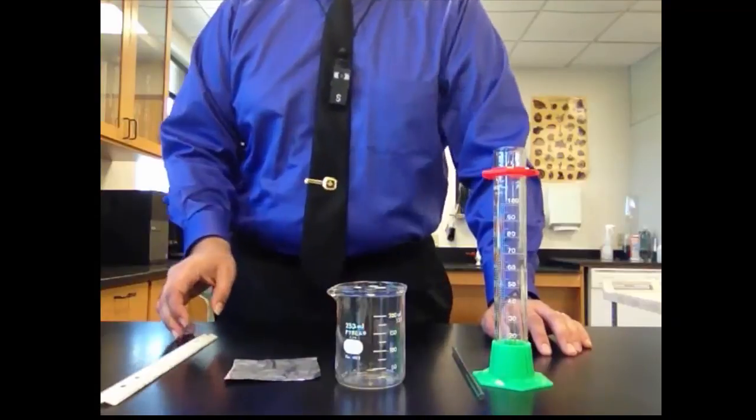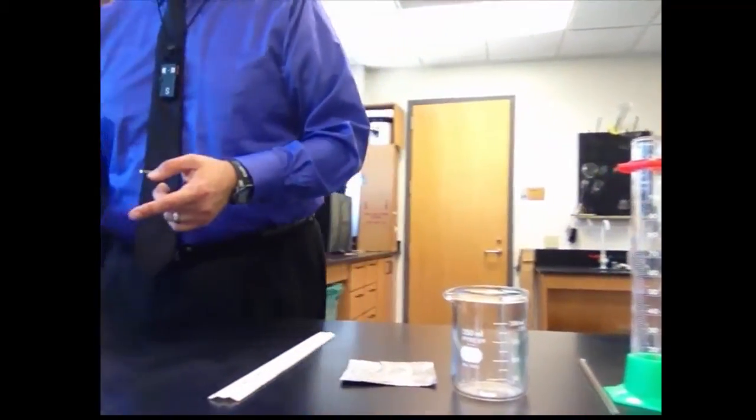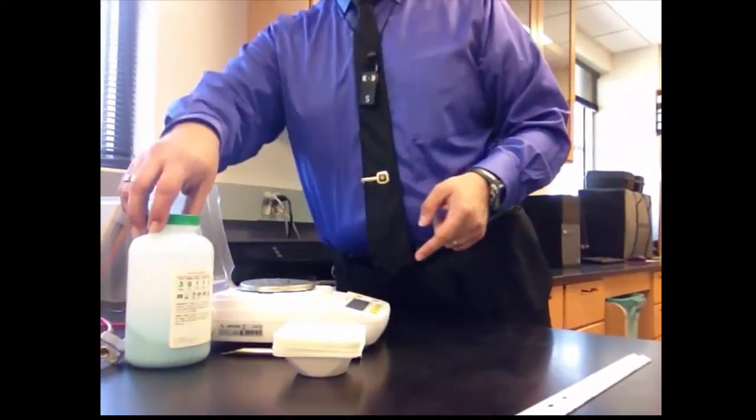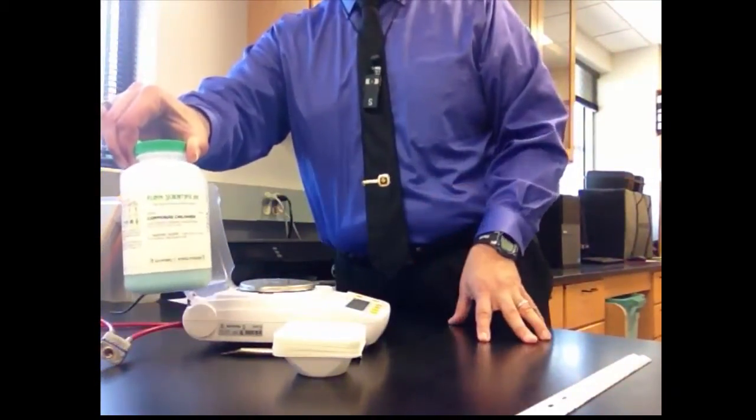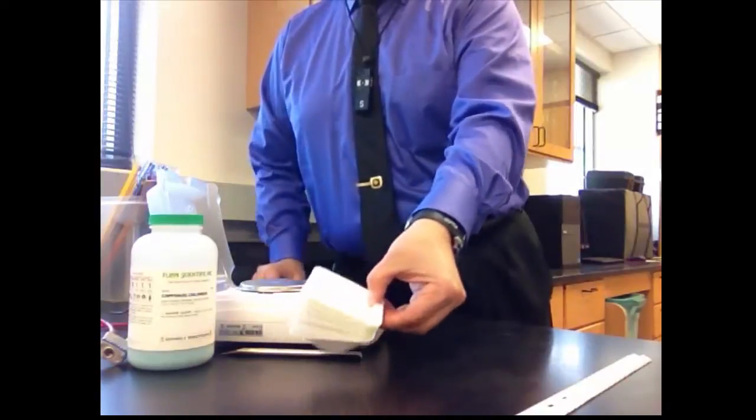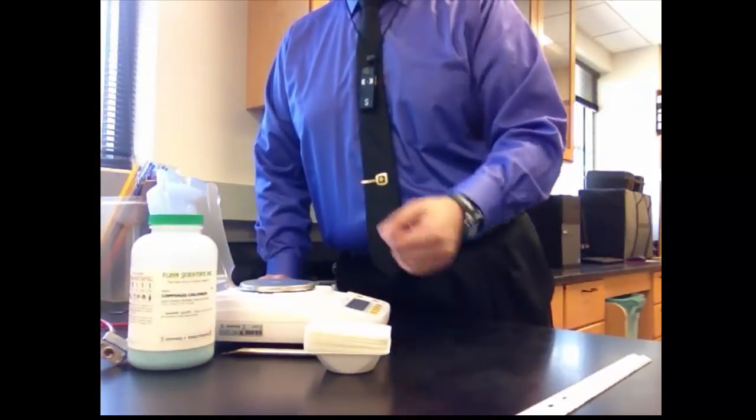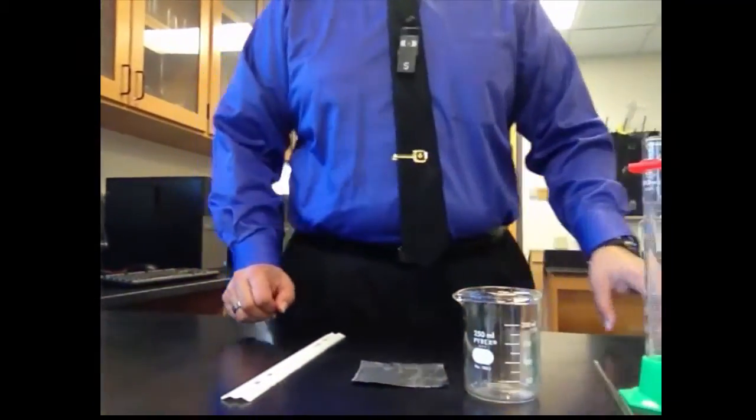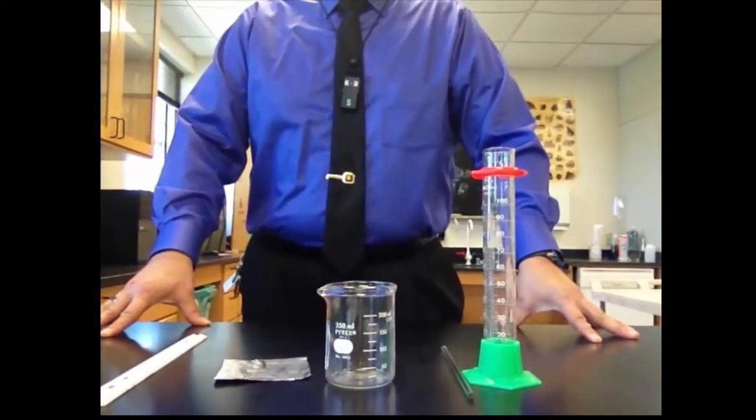And we have a centimeter ruler right here. And we have a couple of other things. Just over here, we have a balance. This is a digital balance that we'll be using. We have the substance called copper chloride and some weighing dishes to weigh out what we need. We're also going to need some deionized water. And you should know where to get that by now.